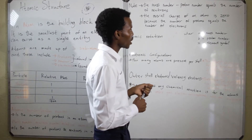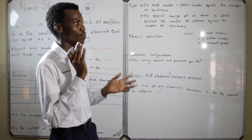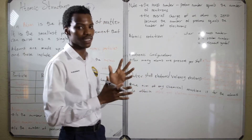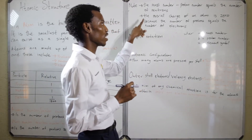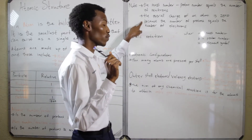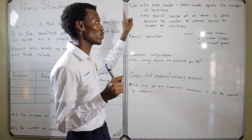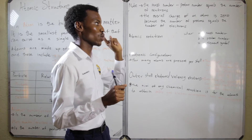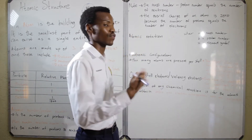The overall charge of an atom is basically zero because the number of protons and the number of electrons always equal each other in terms of an atom. That is also a statement that tends to confuse people in terms of paper 1. So the overall charge of an atom is zero while the overall charge of ions can either be positive or negative.